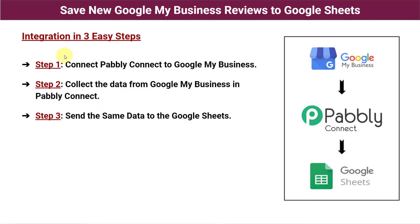Before we start, let me explain three easy steps of integration. Step one: connect PablyConnect to Google My Business — we log in to PablyConnect and integrate Google My Business. Step two: collect the data from Google My Business in PablyConnect — capture the customer details and their comments in PablyConnect. Step three: send the same data to Google Sheets — integrate Google Sheets with PablyConnect so whenever a customer uploads a new review, the details are automatically captured in the sheet created for your business. Let's start with the process now.